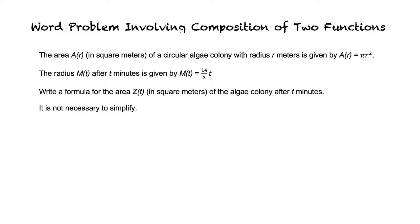If we take the composition of A with M, we can get the area as a function of time. When we take the composition, we get Z(t) = A(M(t)). We will use the expression for M(t) as the input to the function A, replacing the variable r.